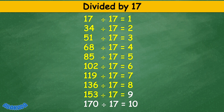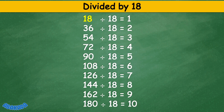Divided by 18: 18 divided by 18 equals 1, 36 divided by 18 equals 2, 54 divided by 18 equals 3, 72 divided by 18 equals 4, 90 divided by 18 equals 5, 108 divided by 18 equals 6, 126 divided by 18 equals 7, 144 divided by 18 equals 8, 162 divided by 18 equals 9, 180 divided by 18 equals 10.